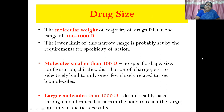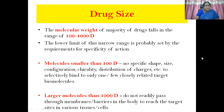Then comes drug size. The molecular weight of the majority of drugs falls in the range of 100 to 1000 daltons. The lower limit is probably set by the requirement for specificity of action — a minimum of 100 daltons is needed for proper specific action. Molecules smaller than 100 daltons do not have the necessary size, shape, configuration, chirality, or distribution of charges to selectively bind to only one or a few closely related target biomolecules. So very small molecules cannot combine selectively with a receptor.